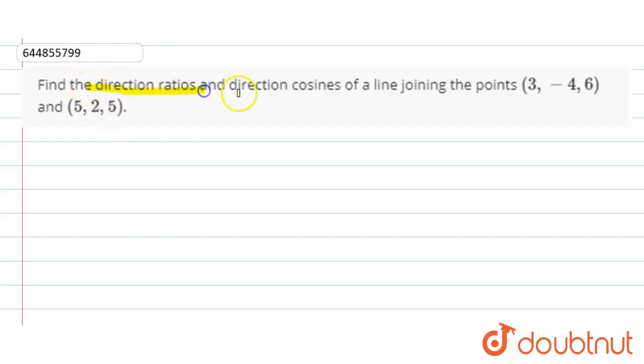find the direction ratios and direction cosines of the line joining the points (3, -4, 6) and (5, 2, 5).